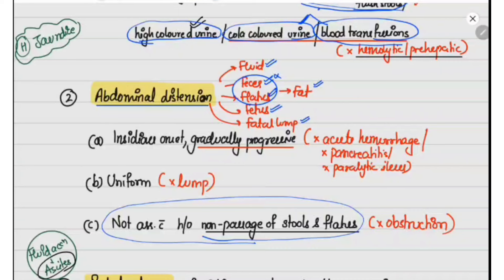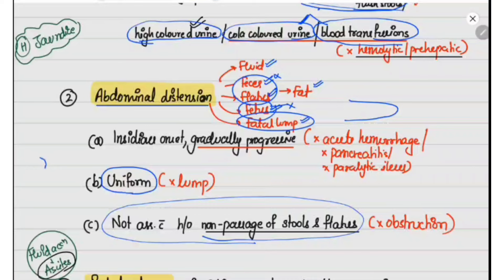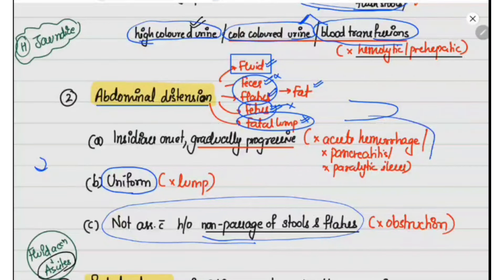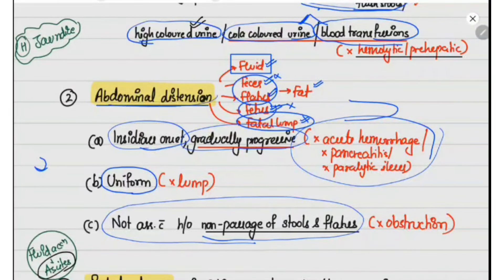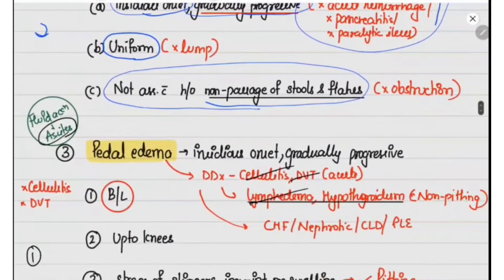As this is a male, fetus is less likely. In case of a fatal lump, usually it arises from an organ so the distension is non-uniform — arising from one part of the abdomen rather than uniformly — making a fatal lump less likely. The most likely cause is fluid. Another reason for abdominal distension could be acute hemorrhagic pancreatitis or paralytic ileus, but these are acute causes presenting with acute onset, whereas in this case there is insidious, gradually progressive onset. So this abdominal distension is probably due to fluid — the patient likely has ascites, which correlates with the hepatic jaundice.